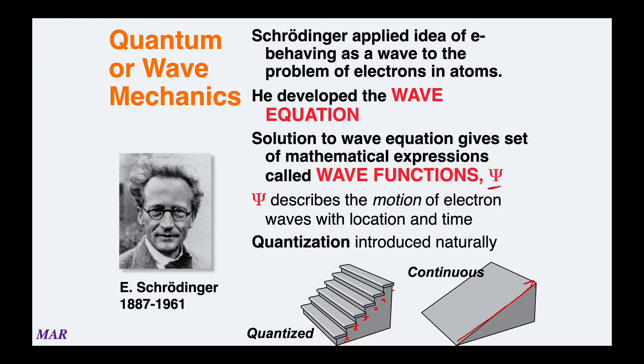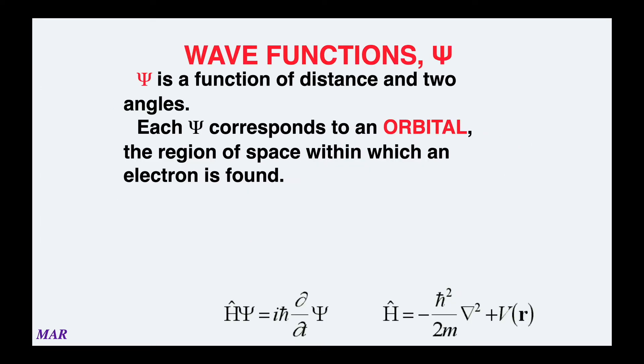Here are some examples of that Hψ = Eψ thing. Each of those ψ wave functions has a distance and two angles. Each wave function corresponds to an orbital, and an orbital is a term we're going to use pretty soon.